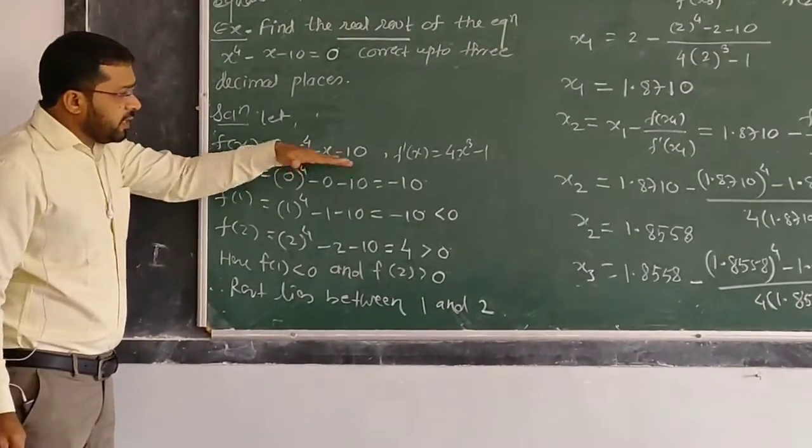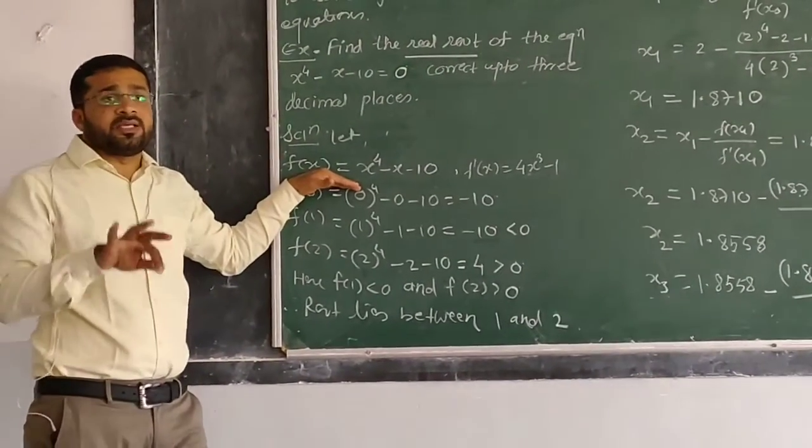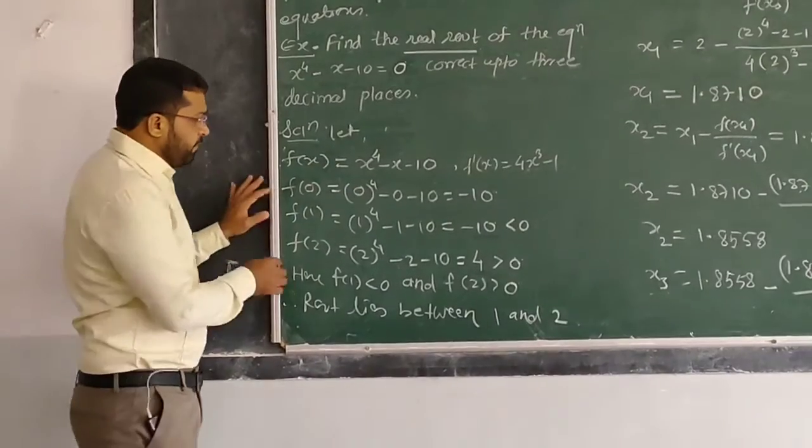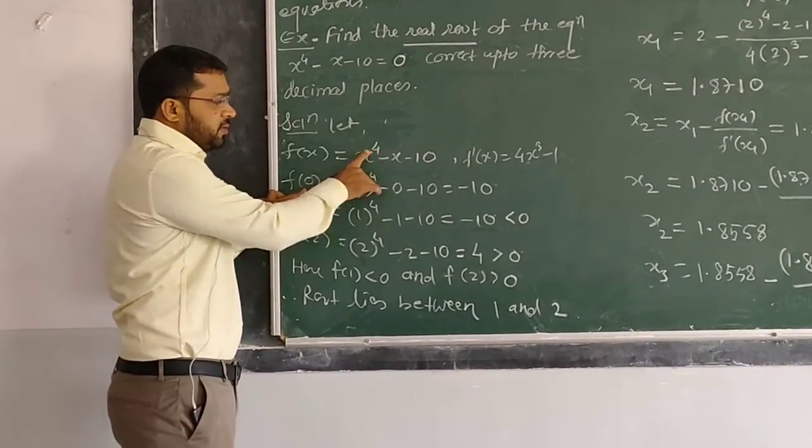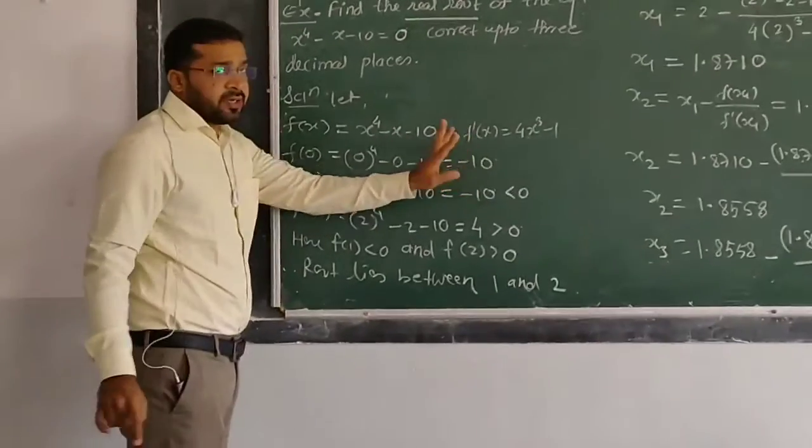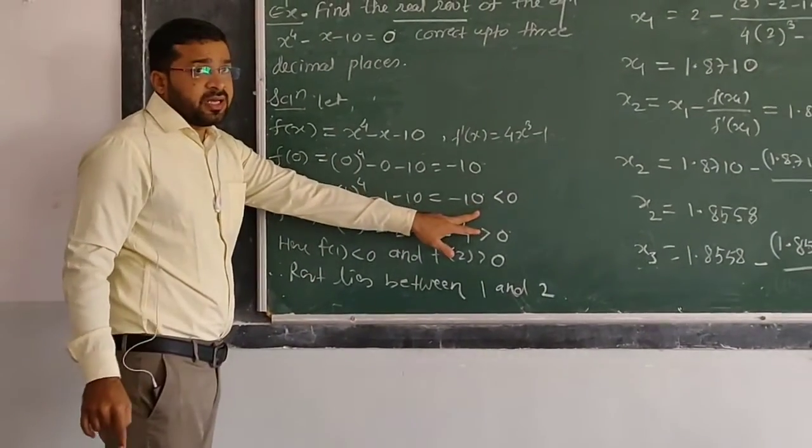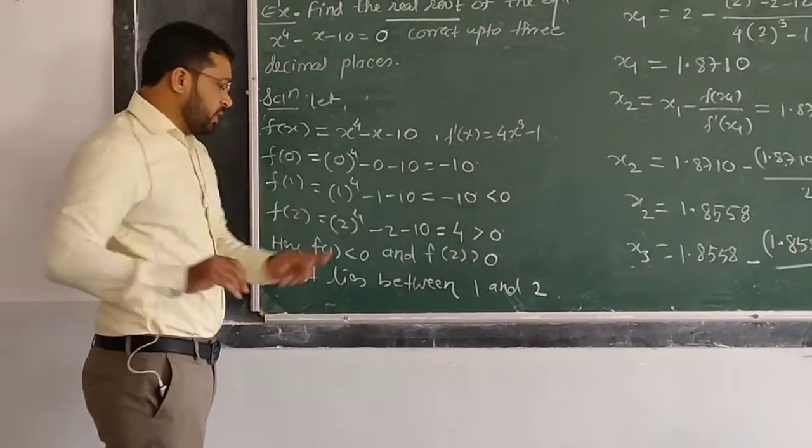After getting the derivative, we first search where the root lies. We will find the value of f(x) in the neighborhood. At x=0, f(0) = -10. At x=1, f(1) = 1 - 1 - 10, which is negative. At x=2, f(2) = 2^4 - 2 - 10.